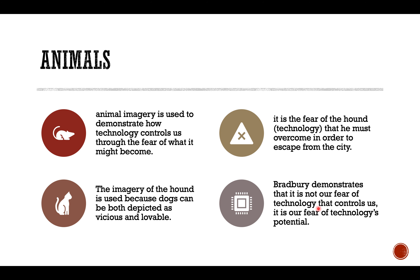Animals in the narrative demonstrate how technology controls us through fear — fear of what they might become. Think about the Mechanical Hound: it's the use of the dog that is both lovable and vicious, both harmless and destructive. Technology is not one or the other — not simply vicious or lovable, not harmless or destructive — rather, it is both, like the dog or like fire.